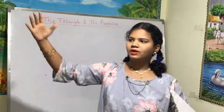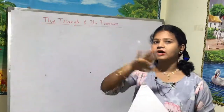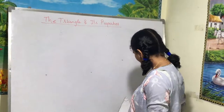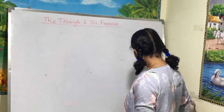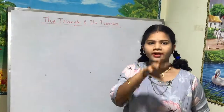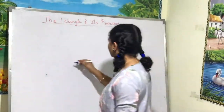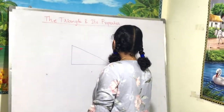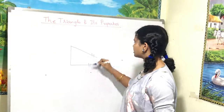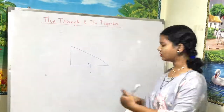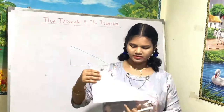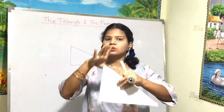Next are the equilateral triangle and the isosceles triangle. An equilateral triangle is one where all sides are equal — neither side is larger nor smaller. An isosceles triangle is a triangle where only two sides are equal but not the third side.